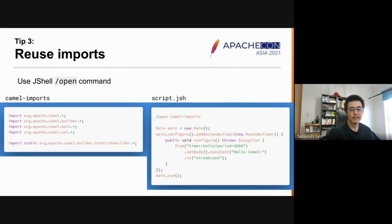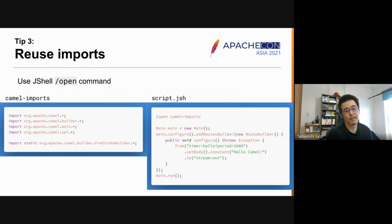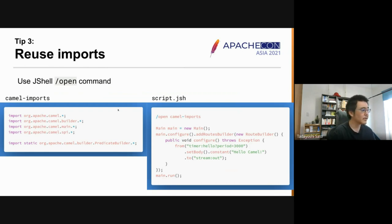Tip three: reuse imports. Using Camel in integration scripting, you need to write almost the same set of imports time and time again. It's a bit tedious to repeat. So you can use the `/open` JShell command to reuse import declarations.